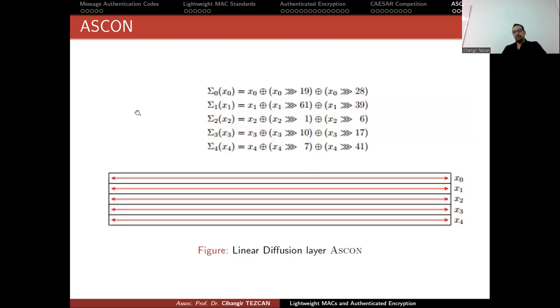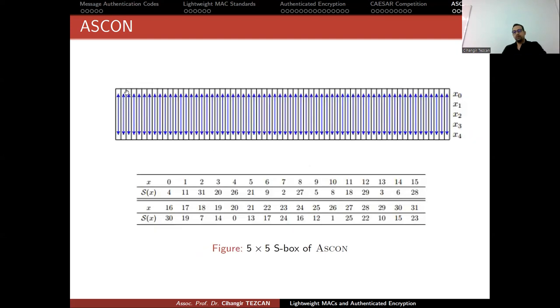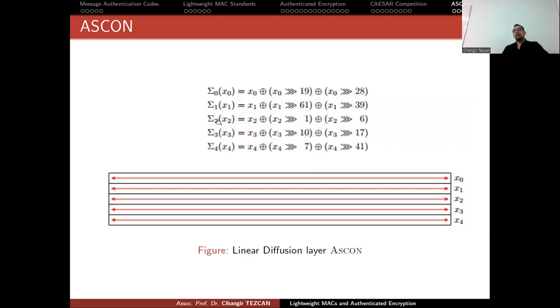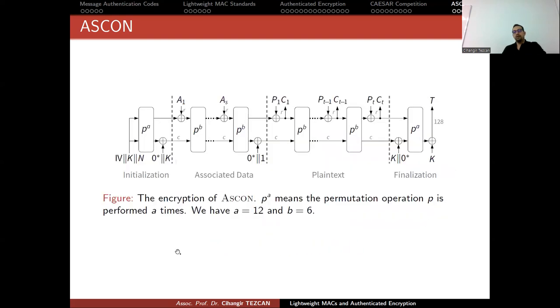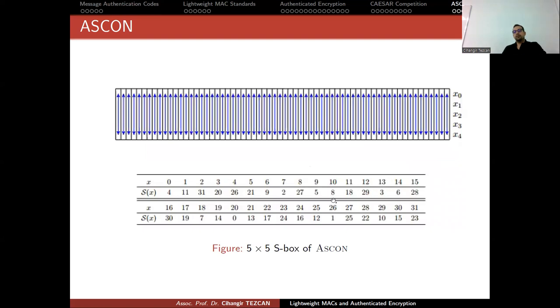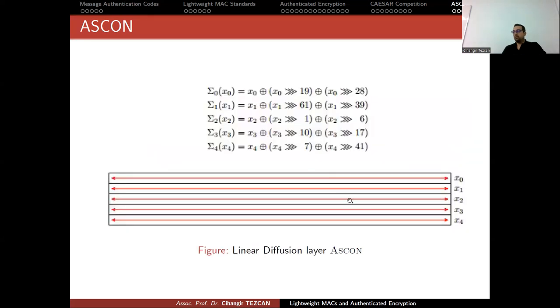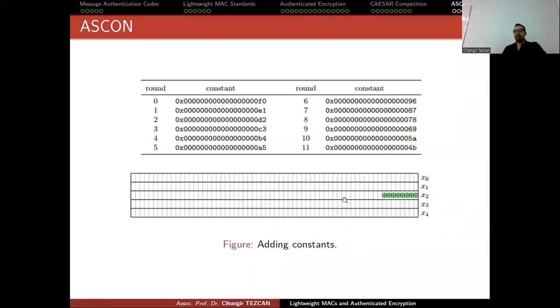Now it is time for diffusion, because here we are operating on columns. What we do is diffusion on rows. You take this first row X0, write it here, rotate it 19 bits to the right, rotate it 28 bits to the right, and XOR these three values and write it back here. This way you provide diffusion. This is your one round. It consists of adding a constant, performing S-box, performing rotations. Repeat this 12 times.